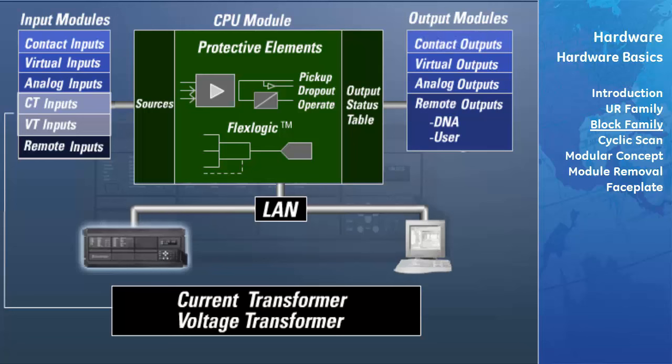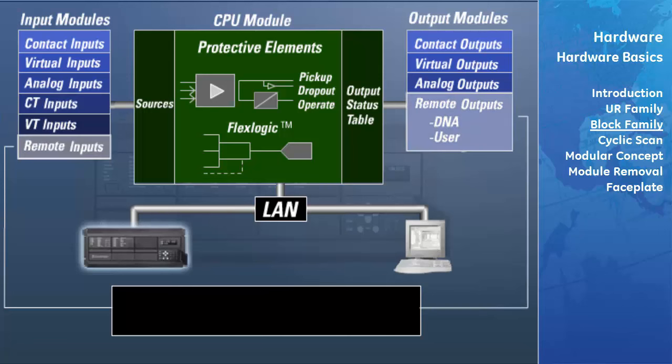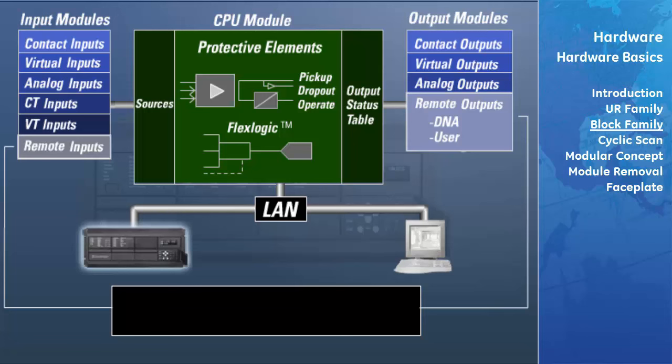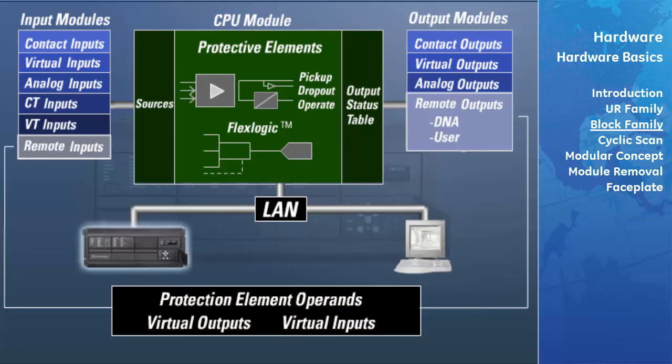The CT and VT inputs refer to analog current transformer and voltage transformer signals used to monitor AC power lines. The UR supports 1 amp or 5 amp CTs. The remote inputs and outputs provide a means of sharing digital point state information between UR relays. The remote inputs reflect the status of specific remote outputs of another relay. The remote output status table can be driven by whichever operand is inserted, including protection element operands, virtual outputs, or virtual inputs.